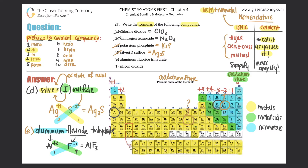Now for the trihydrate part: tri means three, and hydrate means water. When you have a hydrate compound you put a dot symbol after the main formula to represent the water — it does not mean multiply. So we write dot 3H₂O. The full formula for aluminum fluoride trihydrate is AlF₃·3H₂O.